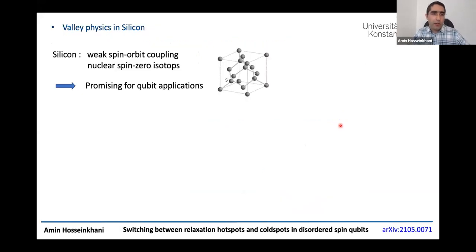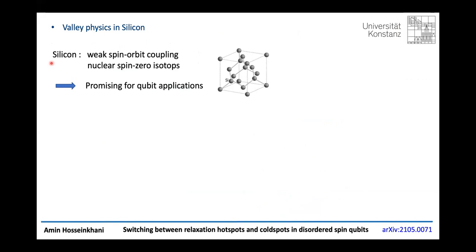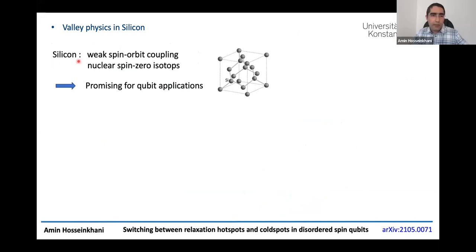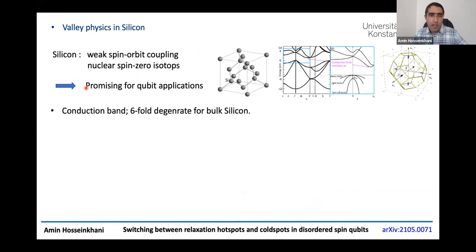As you perhaps know, silicon is a very promising material for quantum information processing. This is partially because in bulk silicon the spin-orbit interaction is very weak, and in addition there are nuclear spin-zero isotopes in silicon. These two properties make silicon a very promising material.